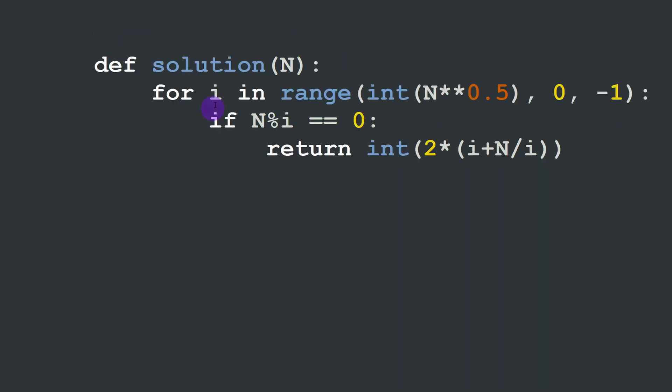This is the Python version of the solution. We have the N number which is the area of the rectangle. For i in range between the square root of N, but we have to cast it into an integer because Python will automatically detect it as a float and it doesn't suit our solution. We have included the upper or the lower range as zero because zero is excluded in Python, so the range function will automatically exclude this side of the range which is zero.